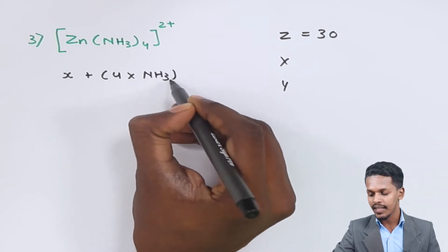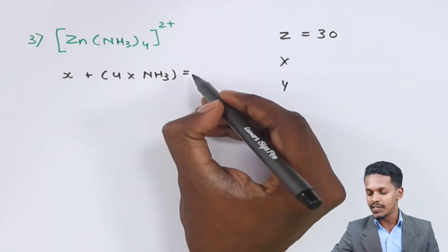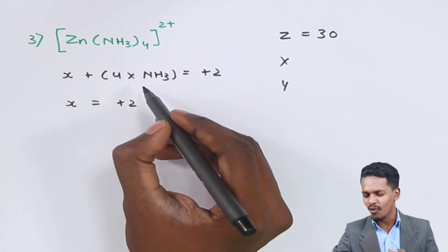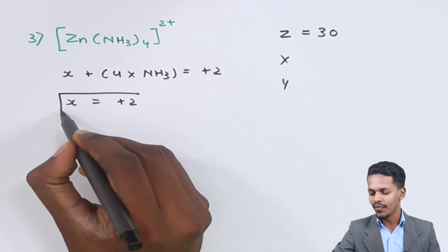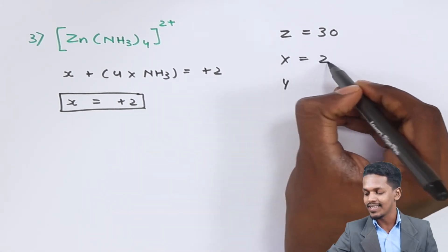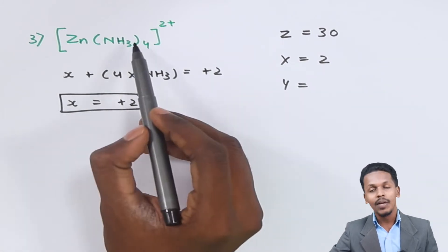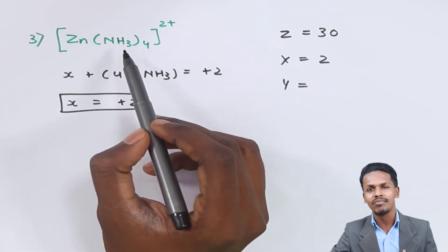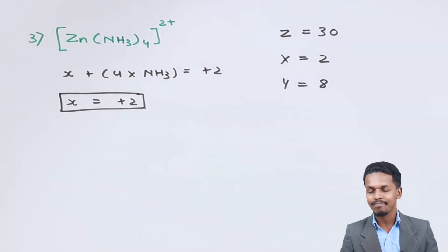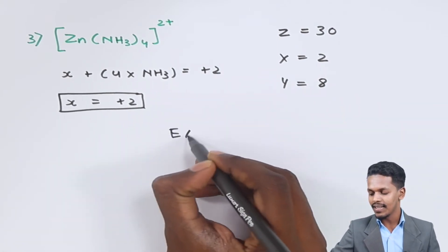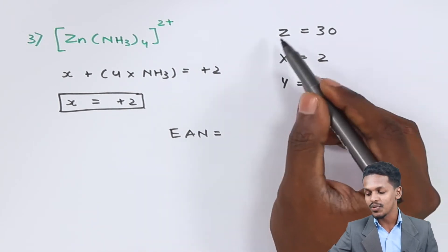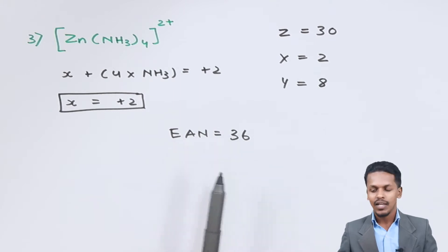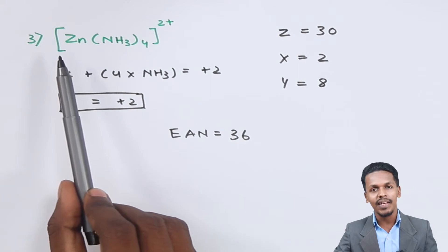There are four moles of NH₃ surrounding zinc and the overall charge of this complex is +2. Since NH₃ is a neutral ligand, it carries no charge, so the oxidation number of zinc is +2, meaning X = 2. For Y, there are four ligands each sharing two electrons, so Y = 4 × 2 = 8. Using EAN = Z − X + Y: 30 − 2 + 8 = 36. This again equals the atomic number of Krypton, indicating a stable complex.